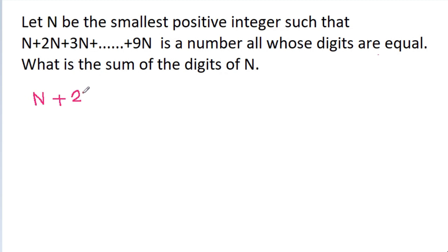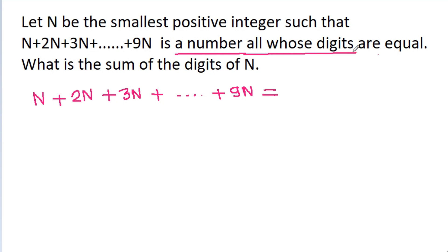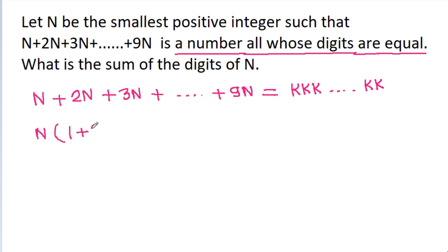So, n plus 2n plus 3n plus up to 9n is a number all whose digits are equal. Suppose the digit is k, so the number will be k, k, k, k — we don't know how many times k appears. We can take n common and get 1 plus 2 plus 3 plus up to 9 equal to k, k, k, k.